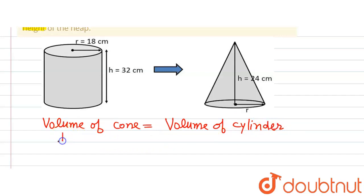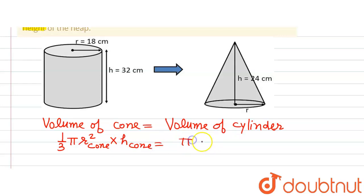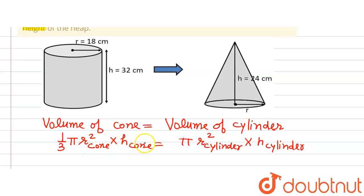The formula for the volume of a cone is (1/3)π r² h, where r is the radius of the cone and h is the height. This is set equal to π R² H, where R is the radius of the cylinder and H is the height of the cylinder. Substituting values will give us the radius of the cone.